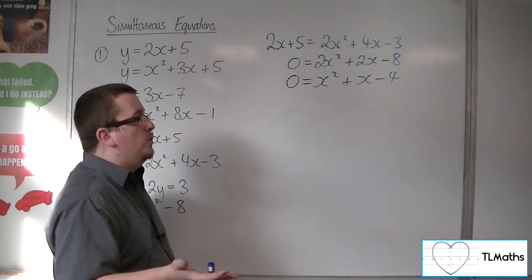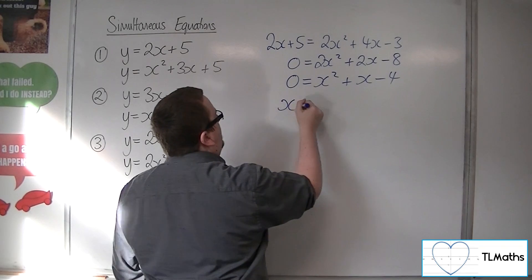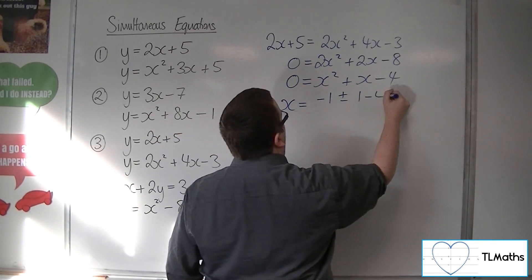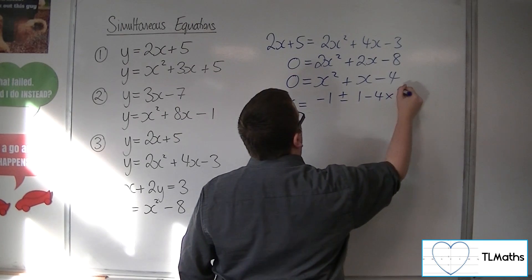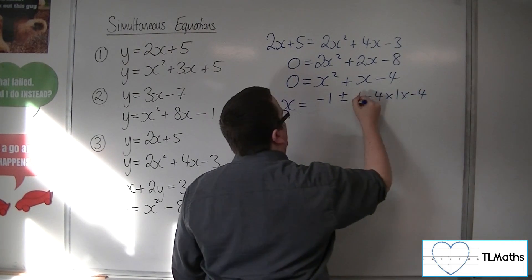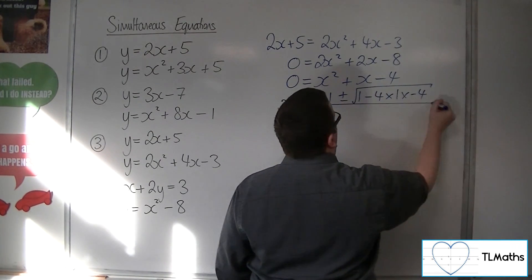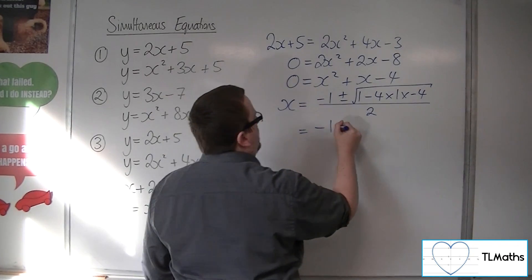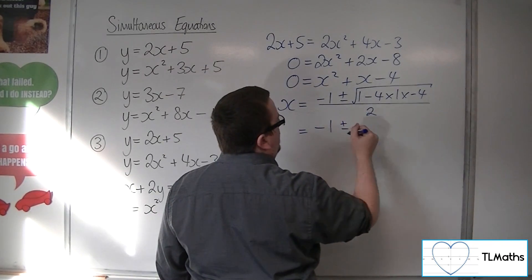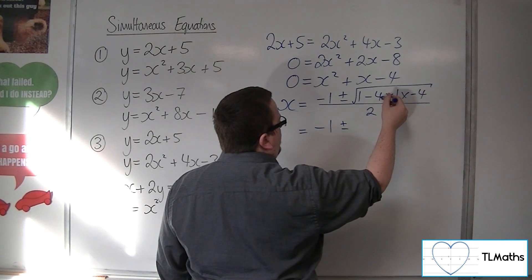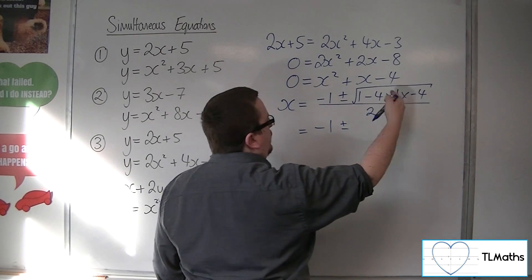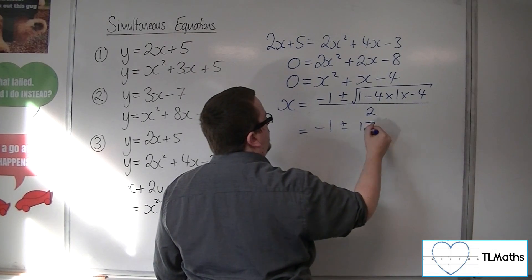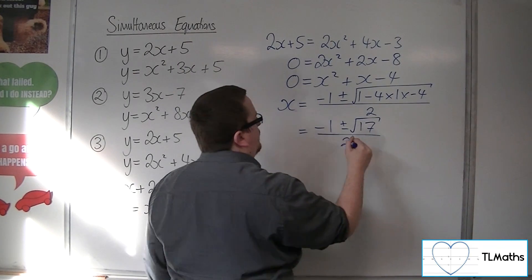I'm going to go straight in with the quadratic formula: x equals minus b, plus or minus the square root of b squared minus 4ac, all over 2a. So we get minus 1, plus or minus the square root of 1 minus 4 times 1 times minus 4 — that's 16 — so 1 plus 16 is 17. So the square root of 17, all over 2.